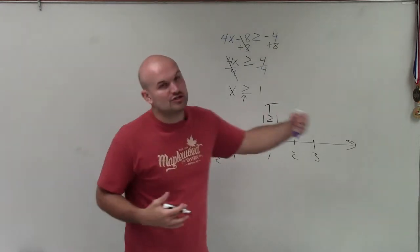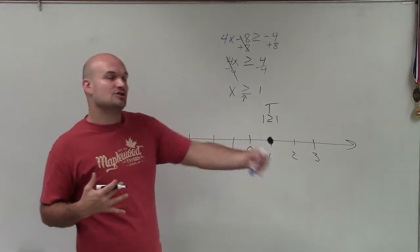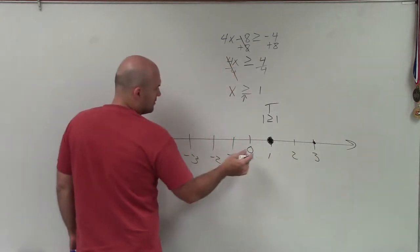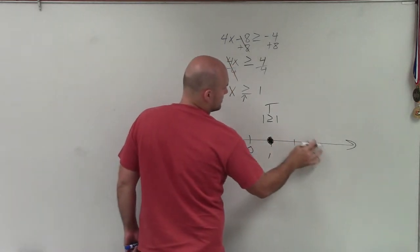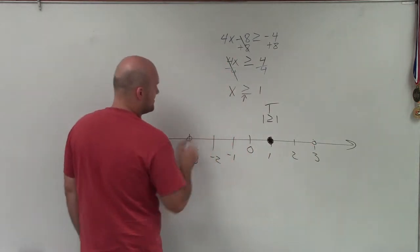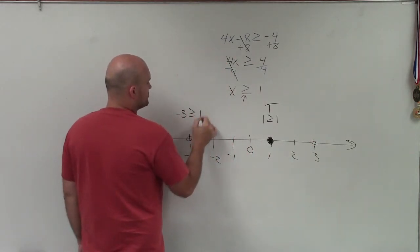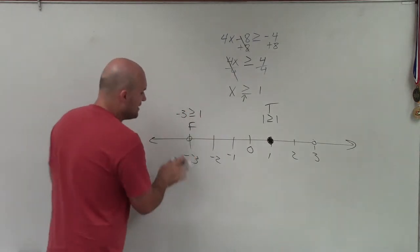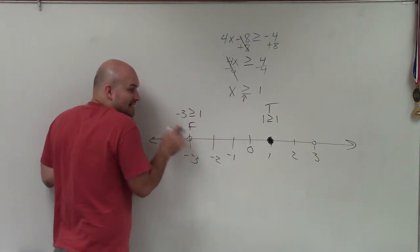Now we need to determine, are we going to be going to the right or to the left? Are all the solutions to the right or to the left? So we just pick points. I pick point 3 and negative 3. So is negative 3 greater than or equal to 1? No, that's false. So therefore, this point is not a part of my solution.